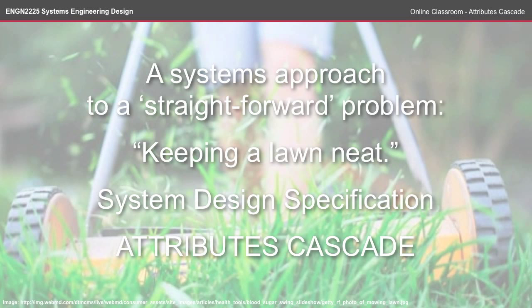In this episode of the online classroom we're going to look at the system design specification topic and as part of that we're going to do our attributes cascade on a systems approach to a straightforward problem: keeping a lawn neat.